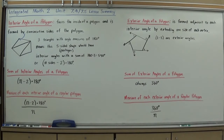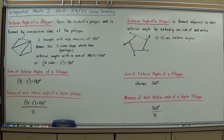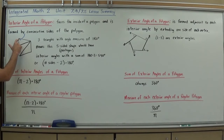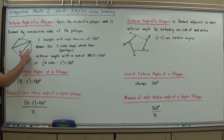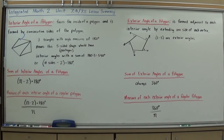The first thing we're going to talk about is what an interior angle of a polygon is. The interior angle of a polygon faces the inside of a polygon and is formed by consecutive sides of the polygon. For example, each corner here would be an interior angle — and we can identify all the interior angles around the shape.